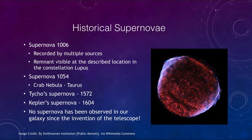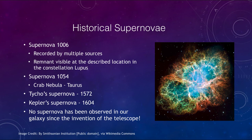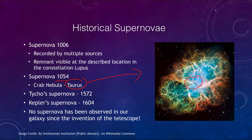Another supernova is the supernova of 1054, known as the Crab Nebula, located in the constellation of Taurus. This supernova was seen to occur on Earth in 1054, and the locations have been recorded — we can point our telescopes there today and find the remnant still visible. At the center of this is a neutron star, still present today. That is the central portion of the star that exploded, and the outer layers — like in the supernova of 1006 — are still expanding out into space to seed material for future generations of stars.